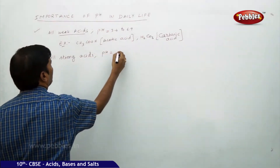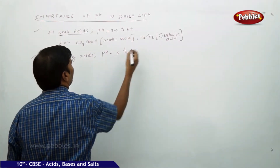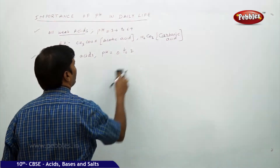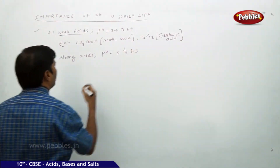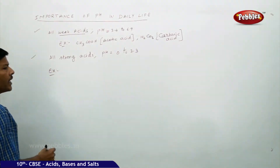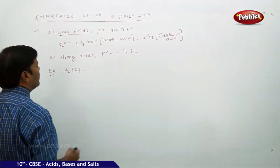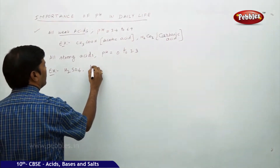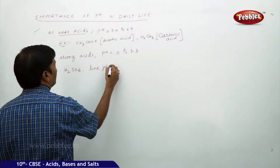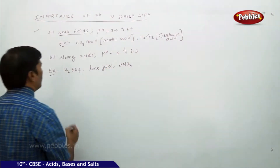For all strong acids, the pH is from 0 to 3.3. Examples of strong acids include sulfuric acid (H2SO4), lime juice, and nitric acid.